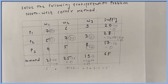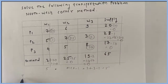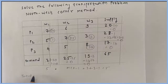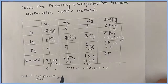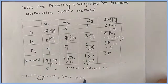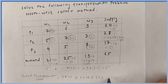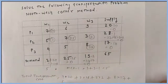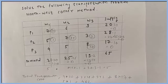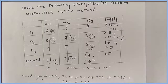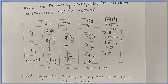Now we will calculate the final total transportation cost. Total transportation cost equals 7×20 + 5×1 + 7×25 + 3×2 + 8×17, which equals 462. Therefore the total transportation cost is equal to 462.